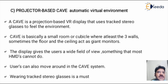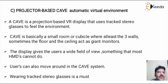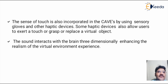Next is projector-based CAVE automatic virtual environment. A CAVE is a projection-based virtual reality display that uses tracked stereo glasses to feel the environment. A CAVE is basically a small room or cubicle where at least three walls, and sometimes the floor and ceiling, act as giant monitors. Users can move around in the CAVE system while wearing tracked stereo glasses. The sense of touch is also incorporated in the CAVE by using sensory gloves and other haptic devices. Some haptic devices allow users to exert a touch, grasp, or displace a virtual object. Sound interacts with the brain in 3D, enhancing the realism of the virtual environment experience.